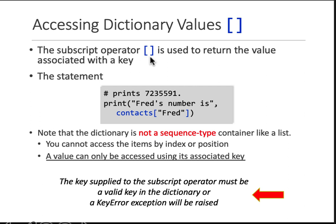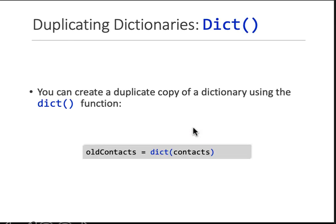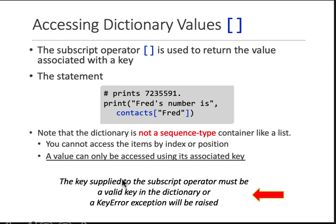The subscript operator — the square brackets — is used to return the value associated with a given key. For instance, if you want to know Fred's number, you give the dictionary name and in the square brackets you give a valid key string. Fred exists in the dictionary, so his number will be returned. If instead of Fred you give Ralph, the key supplied must be a valid key in the dictionary. Ralph is not a valid key, so an exception will be raised — an error will occur — and you will have to handle this exception. A value can only be accessed using its associated key; you cannot give a value to find its key. You should know the key in order to find the value.